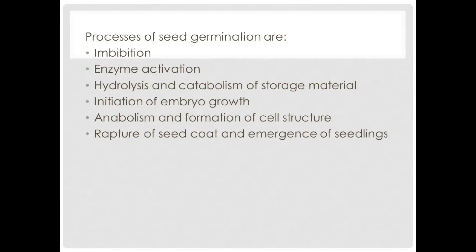Now let's take a look at the processes that are involved in germination. First of all we have imbibition, followed by enzyme activation, hydrolysis and catabolism of storage material, initiation of embryo growth, anabolism and formation of cell structure, and finally rupture of the seed coat and emergence of seedlings.